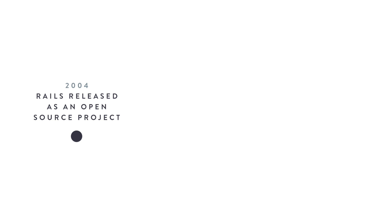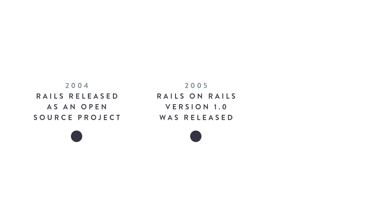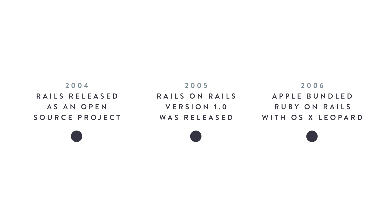It wasn't until 2004 that he extracted the source and released it as an open source project. In 2005, version 1 of Ruby on Rails was officially released, and Rails really took off in 2006 when Apple bundled it and shipped it with Mac OSX Leopard.